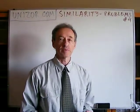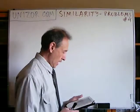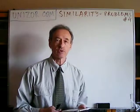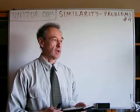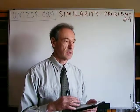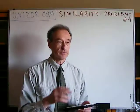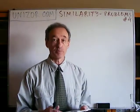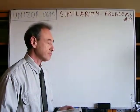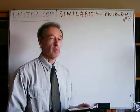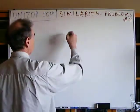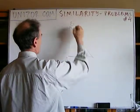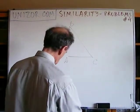I will continue with problems for similarity, and these problems are related to, in some ways, the Pythagorean theorem. They are a little bit more general — not only for right-angle triangles, but also for triangles with acute or obtuse angles. Let me remind first that if you have the right angle...